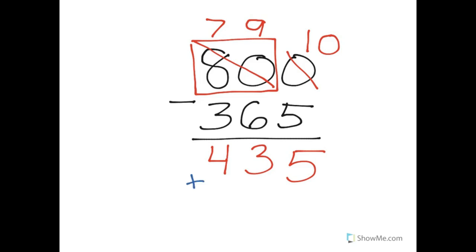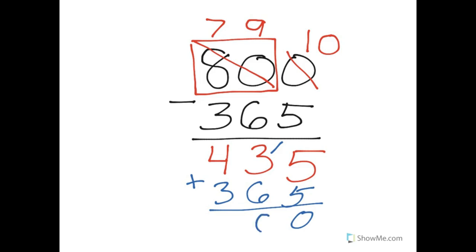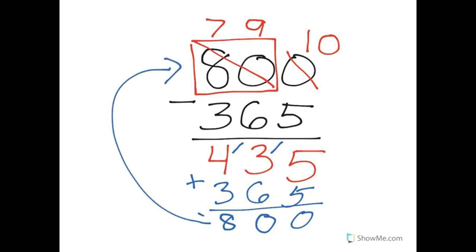Let's check our work real quick to see if we're correct. We're going to add the 365 back in. Five plus five is ten — put down the zero, carry the one to the tens place. One plus three is four, four plus six is ten — put down the zero, carry over to the hundreds place. One plus four is five, and five plus three is eight. I have 800. We're going to check it with the number up here — it is correct, so I get a smiley face. I love those smiley faces.